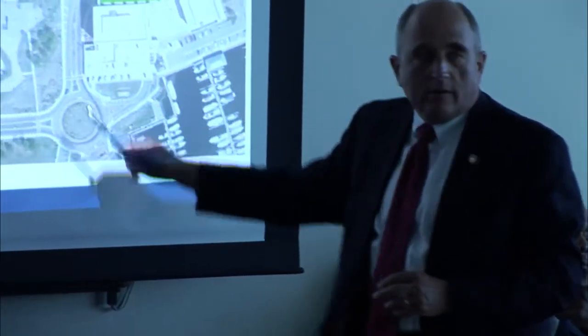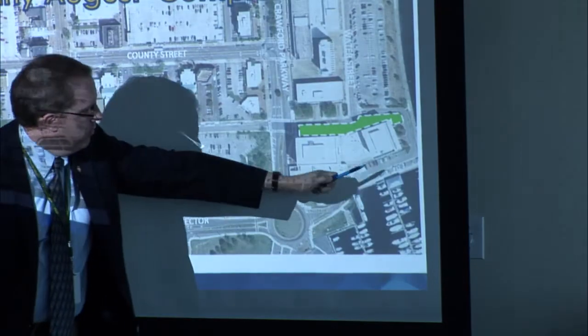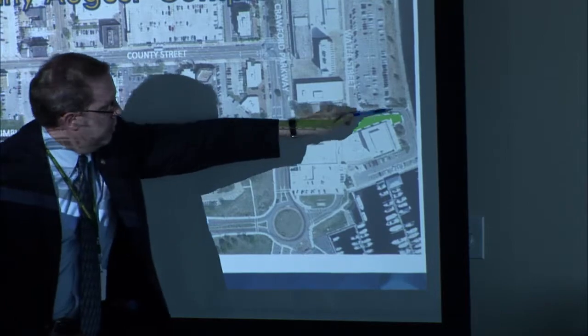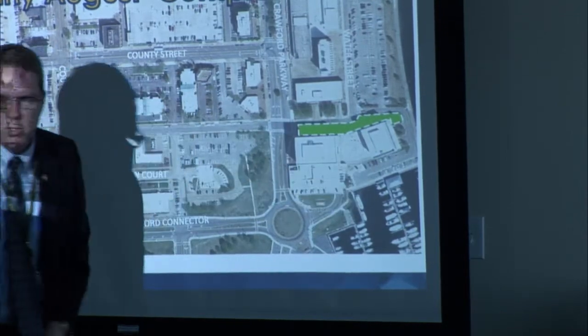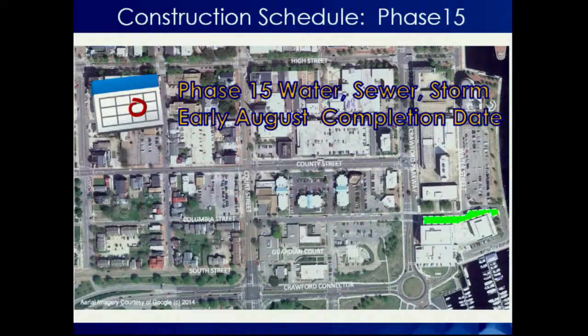We've worked with the constitutional officers on the first floor, including the registrar, to understand their needs. At no time will the entrance to City Hall be impaired or closed. You'll still be able to get into the garage from both exits — the one on the front and the one on the back side. The road that goes around to the marina will still be open, so you can still access City Hall and park in the basement, though you may have to take a roundabout way.